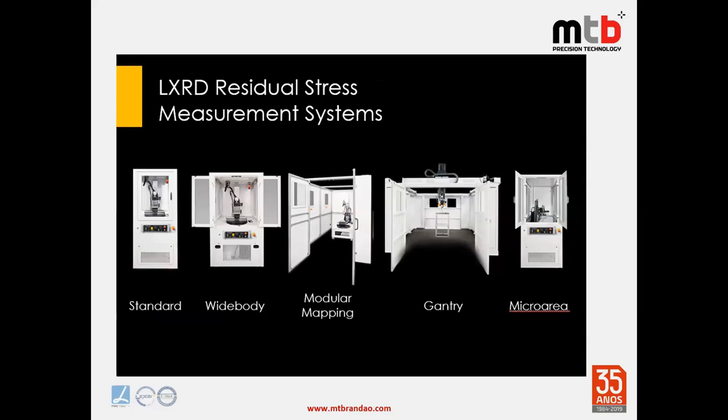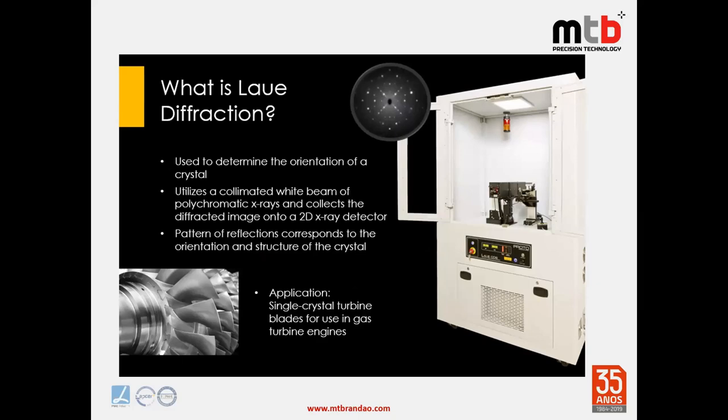We also have Laue diffraction, which determines the orientation of a crystal. It utilizes a collimated white beam of polychromatic X-rays and collects the diffracted image onto a 2D X-ray detector. The pattern of reflections corresponds to the orientation and structure of the crystal. A typical application is single crystal turbine blades used in gas turbines.